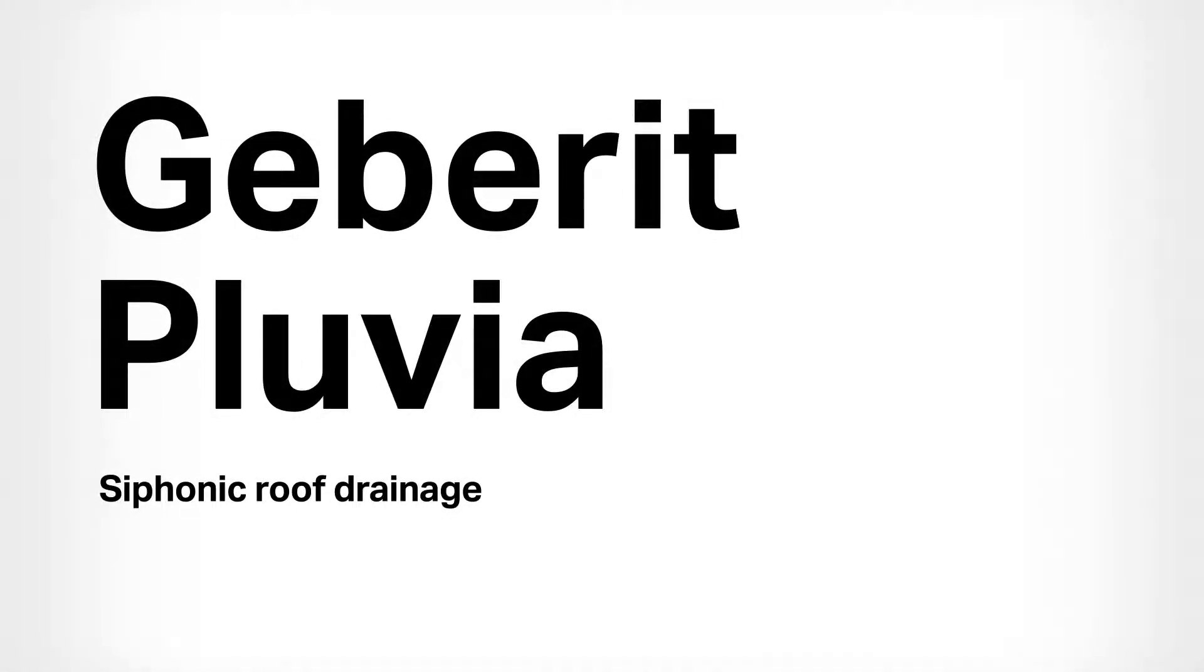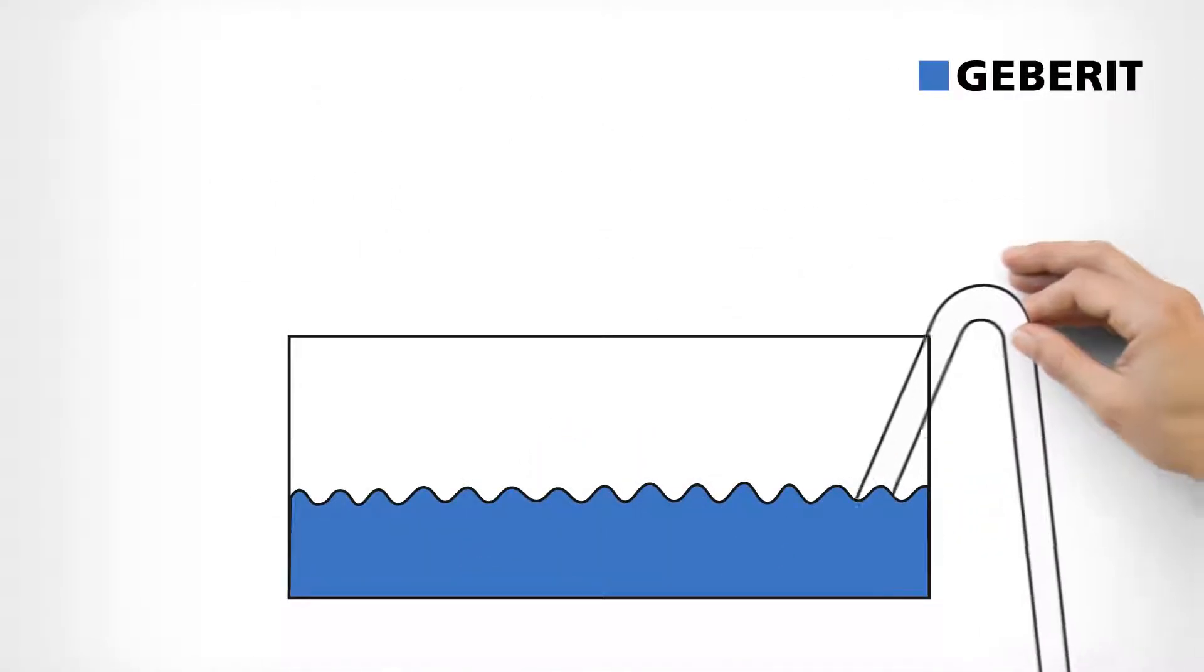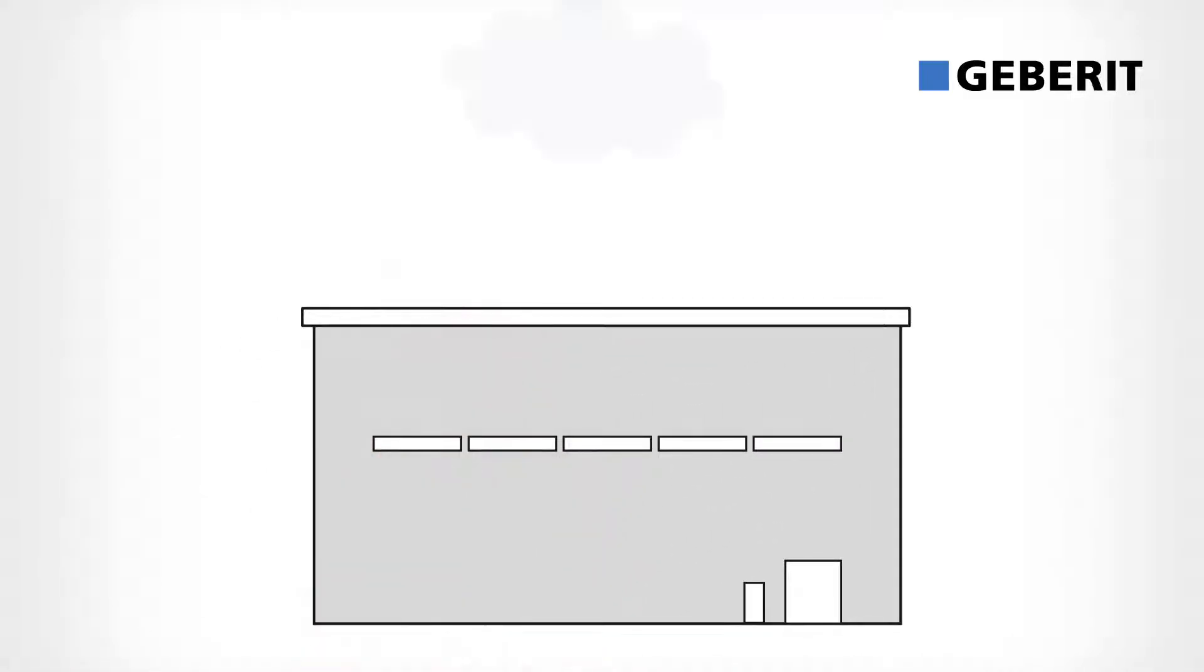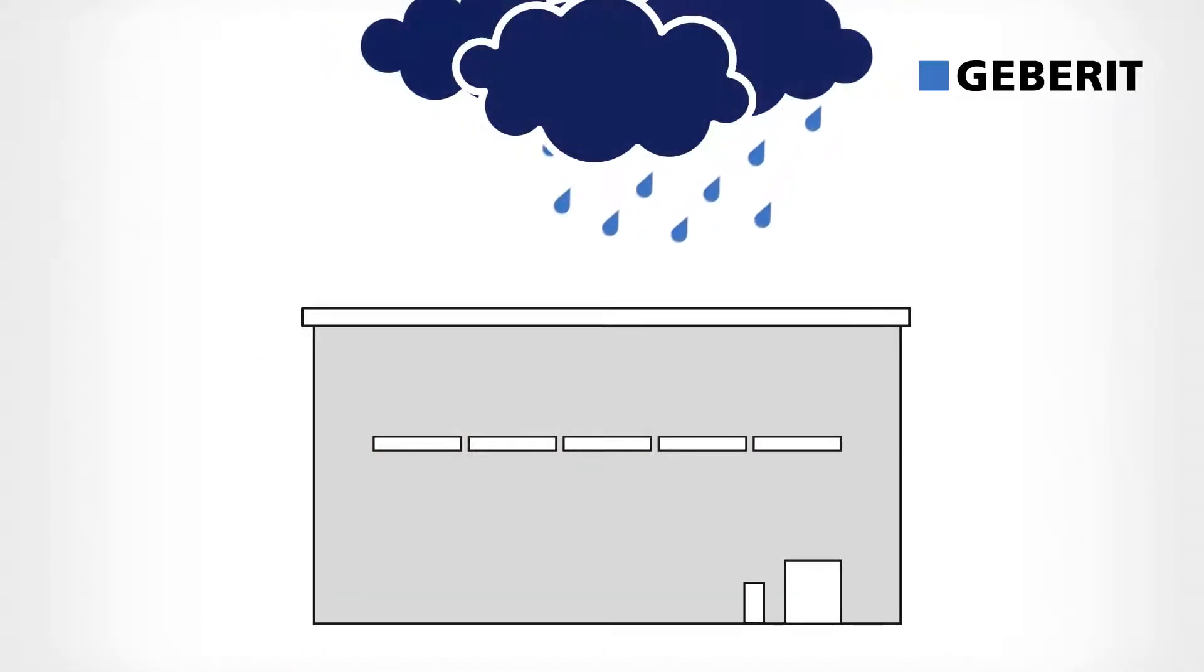Geberit Pluvia Siphonic Roof Drainage. Drainage made easier with negative pressure. It's the principle you need for roof drainage.